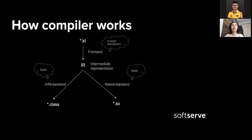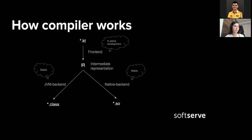A few weeks ago there was a presentation with Kotlin 1.5, where they presented an updated compiler for Kotlin Multiplatform. The compiler divides work into two parts — frontend and backend. We write Kotlin files; the frontend compiler creates an intermediate representation, which is a data structure representing the source code. After that, the backend compiles your code into bytecode and native binaries.